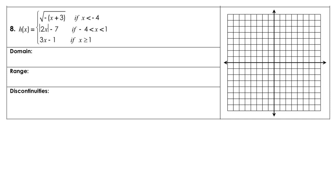For this problem, we have two separate borders — one at negative 4 and another at positive 1. Looking here, we substitute in negative 4. If we plug in negative 4, we get negative 1, then positive 1, and the square root of that is 1. So I have (negative 4, 1), and that is an open circle.